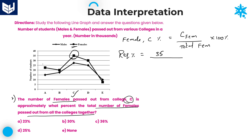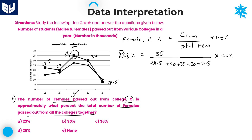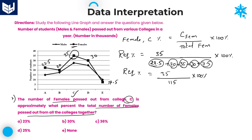The total females from all colleges are: 22.5 + 20 + 35 + 30 + 7.5 (all in thousands). Since thousands cancel in numerator and denominator, the required percentage is 35 divided by (22.5 + 20 + 35 + 30 + 7.5) into 100. Adding: 22.5 + 7.5 = 30, plus 30 = 60, plus 20 = 80, plus 35 = 115. So it's 35/115 × 100.